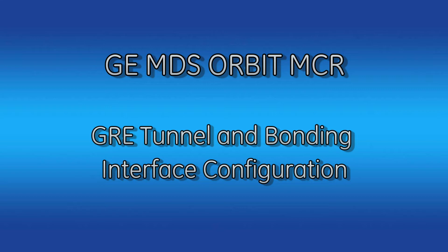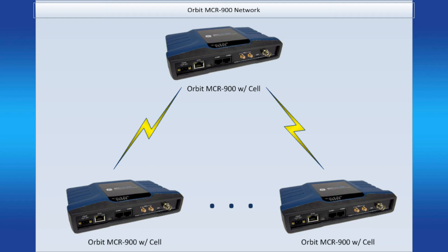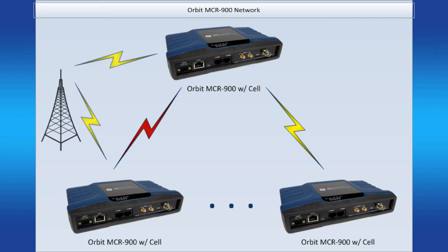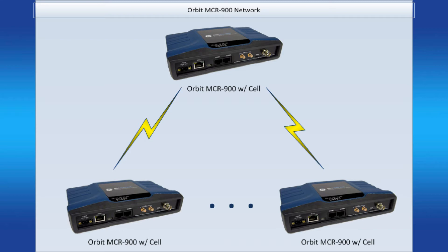Before we dive into the configuration, let's cover some of the basics. Let's say that we have a network of Orbit MCR900s as shown, and something happens to the link between the AP and one of the remotes. Normally you would lose contact with that remote until the link was restored; however, with the failover functionality this is no longer the case. In the event that the 900 link goes down, the Orbit will automatically start sending traffic over the cellular interface. Once the 900 link is restored, the Orbit will then resume sending traffic over that link.